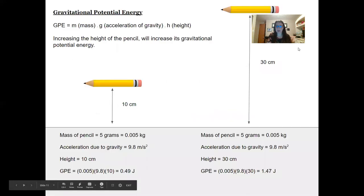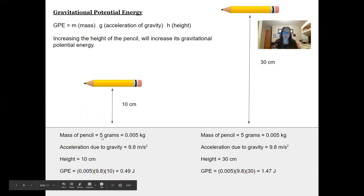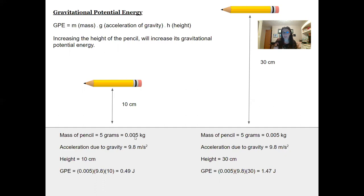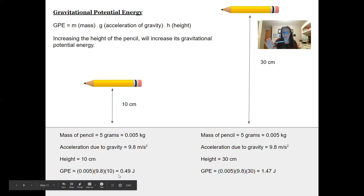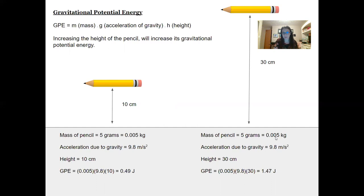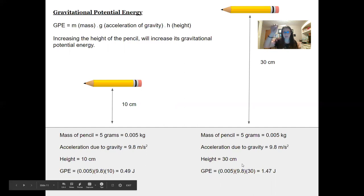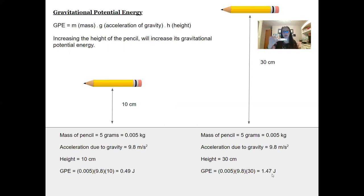The gravitational potential energy equation is: GPE = mass × gravity × height. A pencil with a mass of about 5 grams, or 0.005 kilograms, at a height of 10 centimeters above the desk has a GPE of 0.49 joules. When I raise the pencil to 30 centimeters, the mass is still 0.005 kilograms, and the GPE becomes 1.47 joules. Simply by increasing an object's height, you increase its gravitational potential energy.